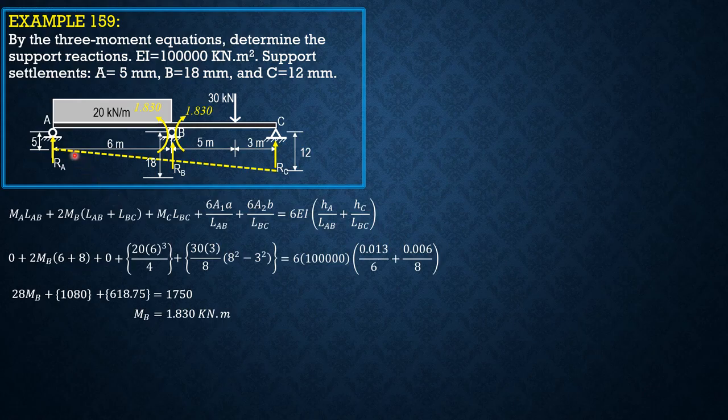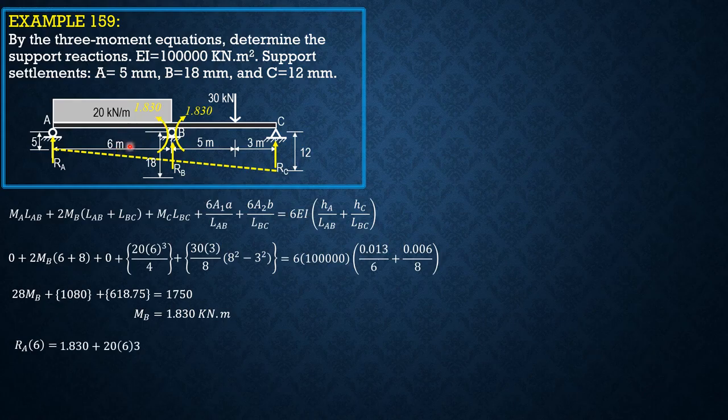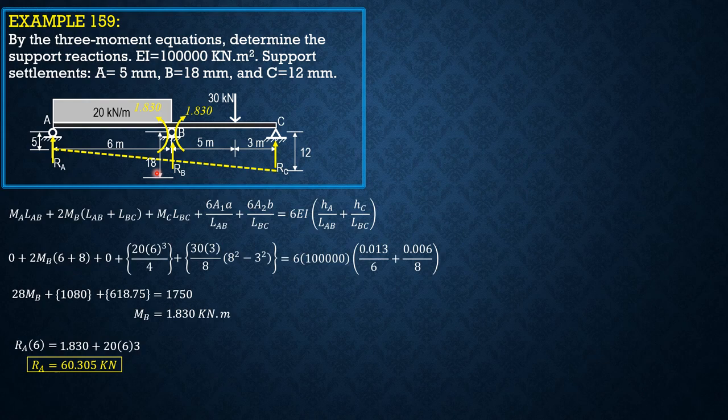So considering AB, we can solve RA. Summation of moments about B equals 0: RA × 6 = 1.83 + 20 × 6 × 3. So RA = 60.305, which verifies our answer from Example 147 by the force method.